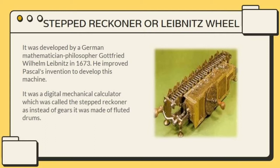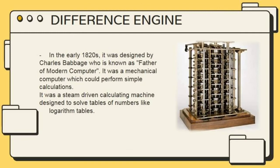The next one is the Stepped Reckoner, or Leibniz Wheel. It was developed by a German mathematician and philosopher, Gottfried Wilhelm Leibniz, in 1673. He improved Pascal's invention to develop this machine. It was a digital mechanical calculator called the Stepped Reckoner, which, instead of gears, was made of fluted drums.